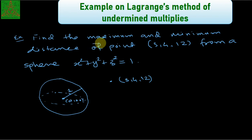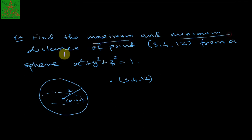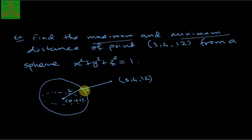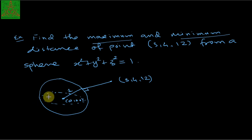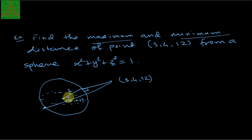The question is to find out the maximum and minimum distance from this point to the sphere. The minimum distance is the shortest distance between the sphere and this point, and the longest distance is something we need to calculate.